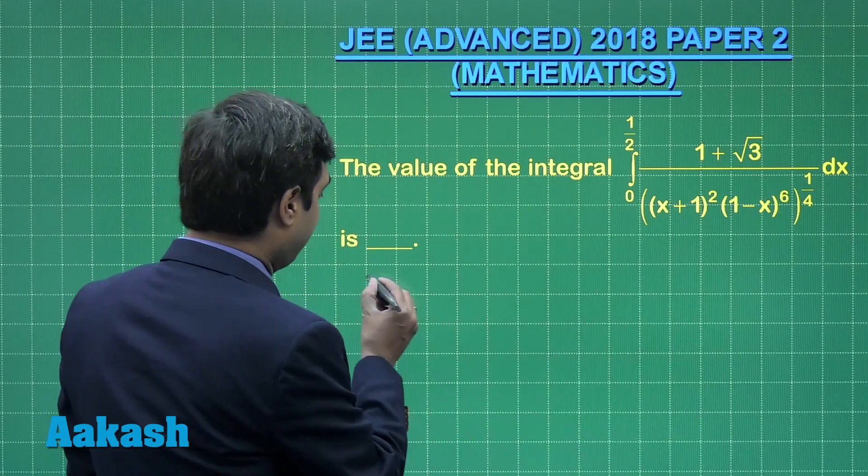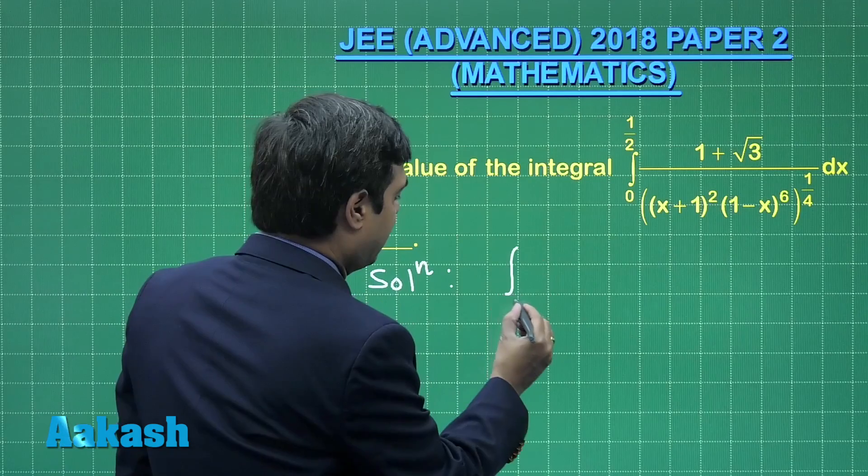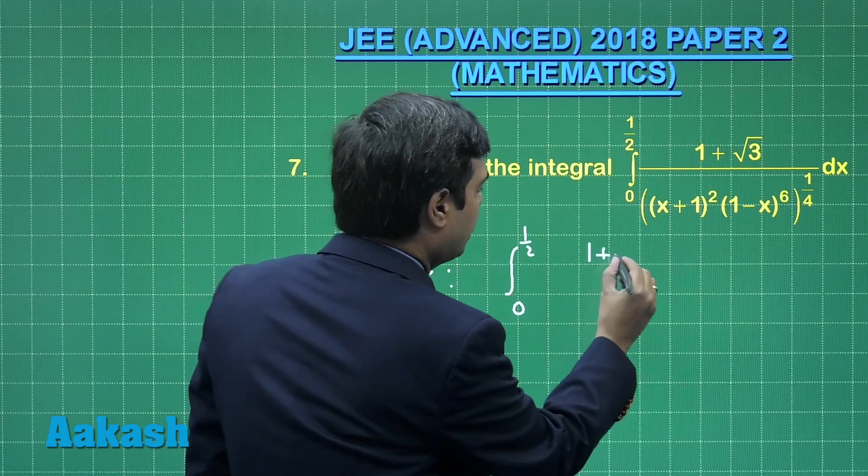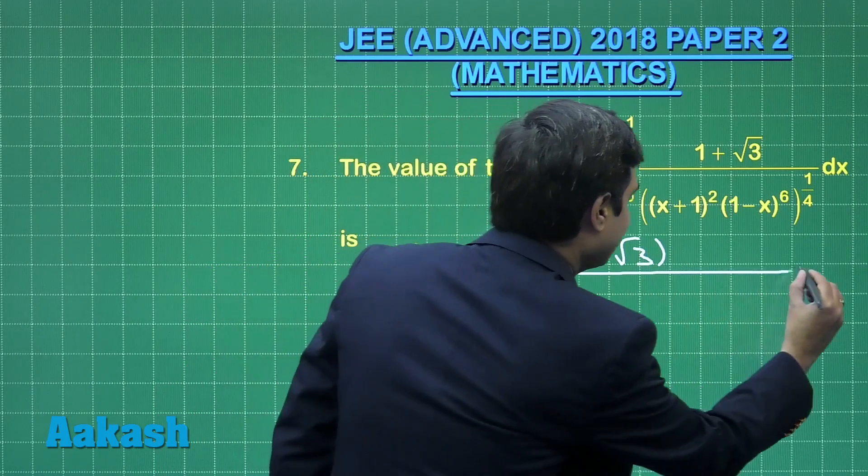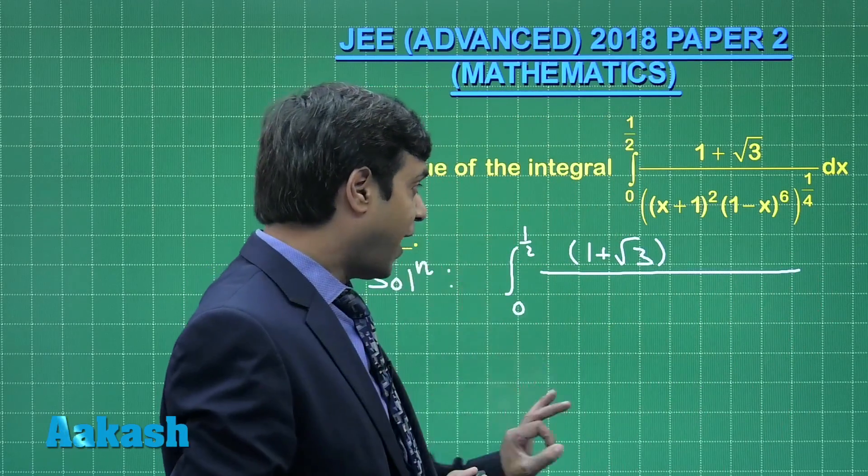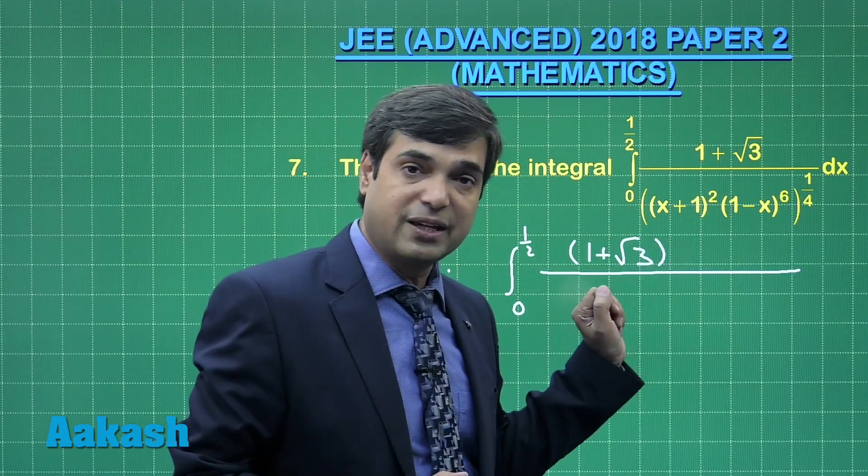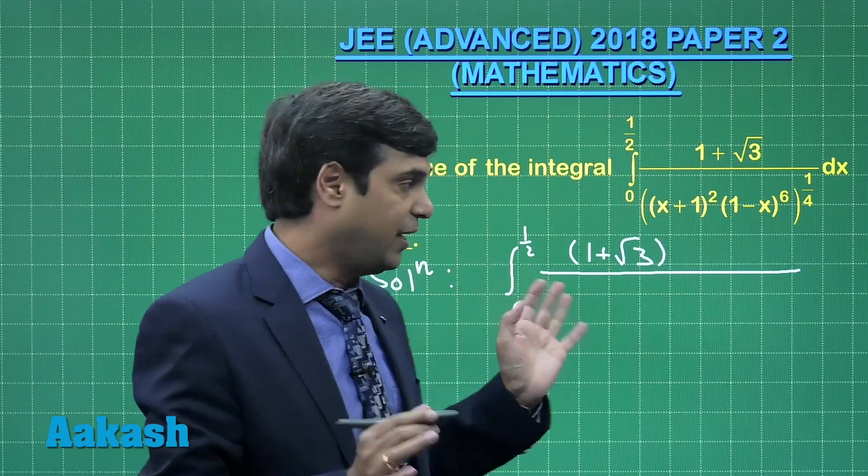A simple question, standard format. We can solve it as integral 0 to 1/2, 1 plus root 3. We can also take this term outside the integral sign as it is the constant term. We can change it either to (x plus 1) upon (1 minus x) form or to (1 minus x) upon (x plus 1) form, any of the two.